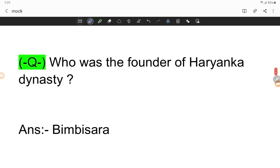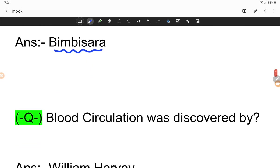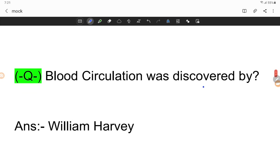Who was the founder of the Haryanka dynasty? Bimbisara was the first king of the Haryanka dynasty. Blood circulation was discovered by whom? This important science question - blood circulation was first discovered by William Harvey.